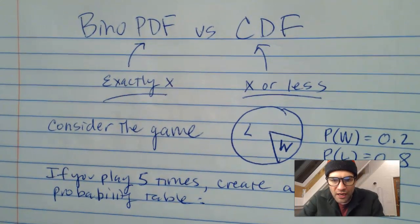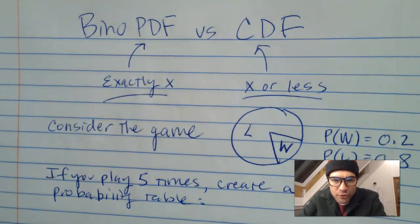We're going to talk about the difference between Bino PDF and Bino CDF. PDF is winning exactly X number of times out of a few games, and CDF is cumulative, so it's winning X or less games out of so many games. So it's X or less wins out of so many games, which is cumulative, and PDF is exactly X wins out of so many games.